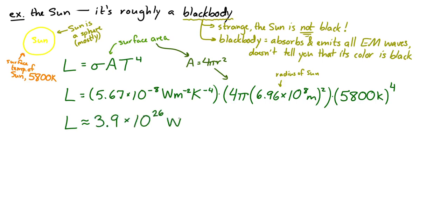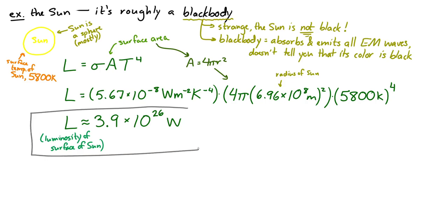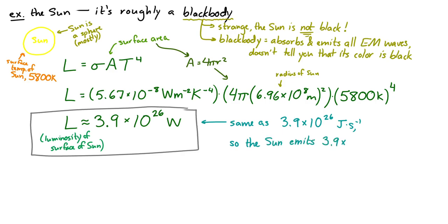If that sounds like a lot, it is. One way to interpret this: 3.9 times 10 to the 26 watts is the same as 3.9 times 10 to the 26 joules per second. So every second, the sun is emitting 3.9 times 10 to the 26 joules as electromagnetic waves.